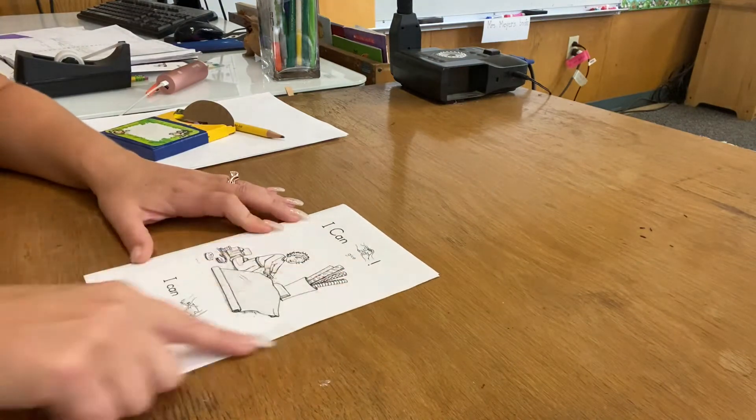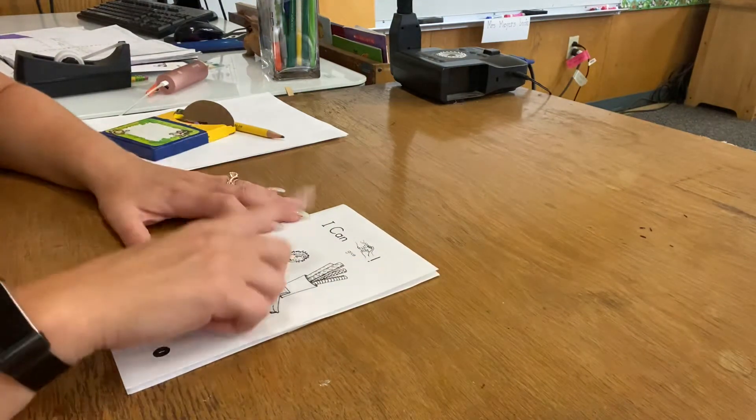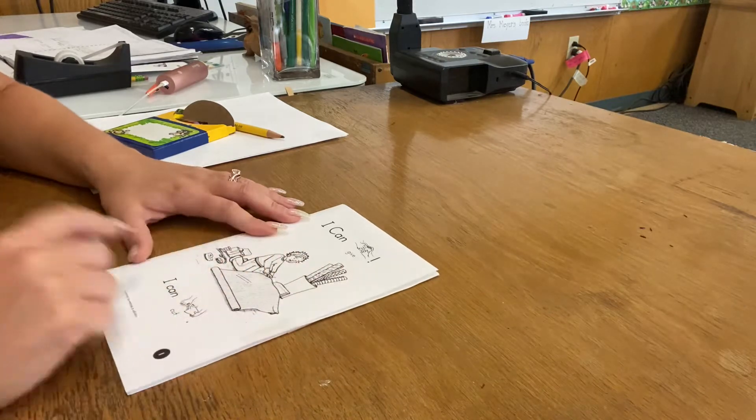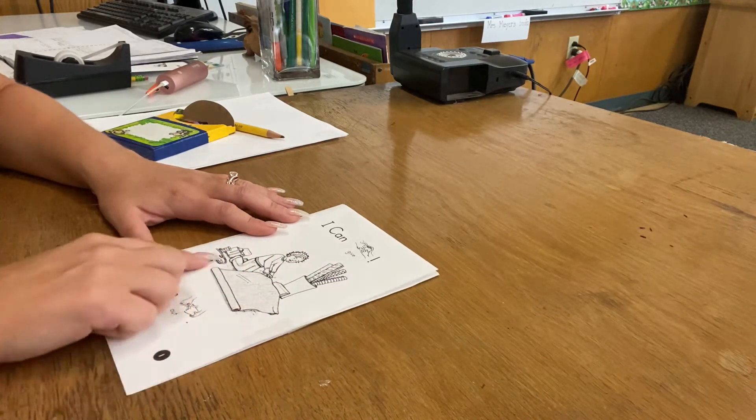So before we start reading, let's do a picture walk. So I see a girl. It looks like she's got all of her wrapping paper out. It looks like she's cutting the wrapping paper.